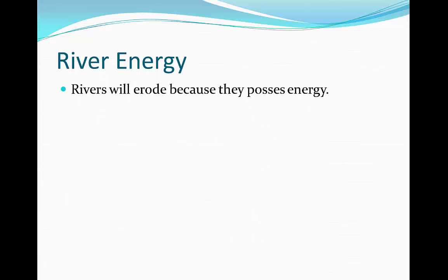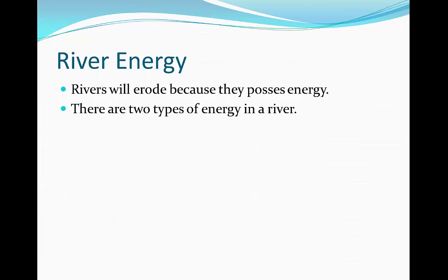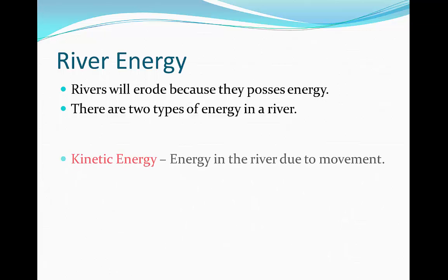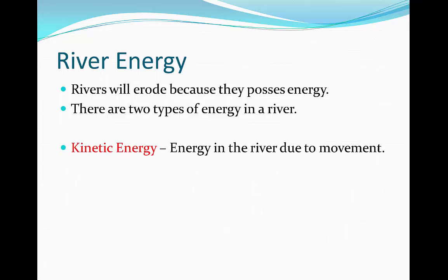Rivers are going to erode because they possess energy. Now the level of energy a river has is going to depend on a number of factors. However, we're just going to look at the two main types of energy in a river. The first type is kinetic energy, and this is the energy that a river has due to movement.